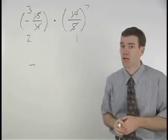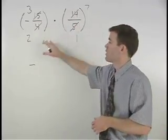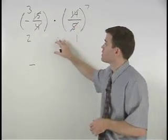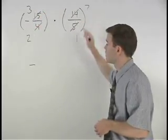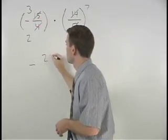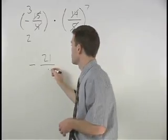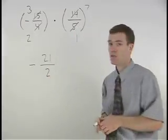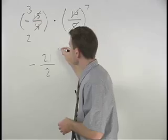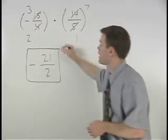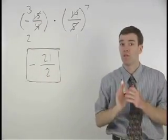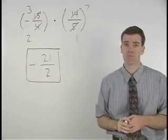Now we can multiply across the numerators and across the denominators. So we have 3 times 7 which is 21, and 2 times 1 which is 2. So our answer is negative 21 halves. Be very careful with your signs.